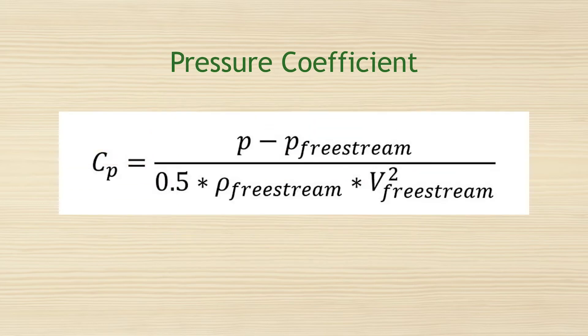In fluid dynamics, the dimensionless pressure coefficient describes the relative pressure present throughout a flow field. Aerodynamics and hydrodynamics both use the pressure coefficient. In a fluid flow field, each point has a specific pressure coefficient.